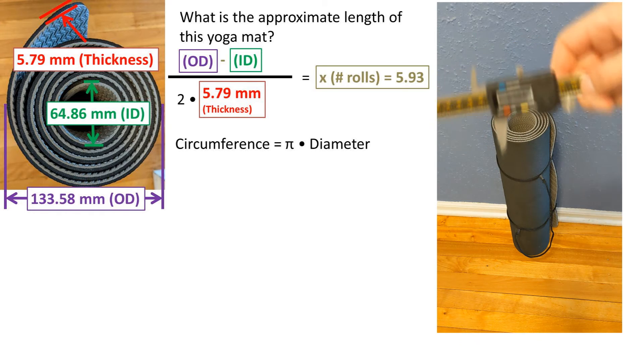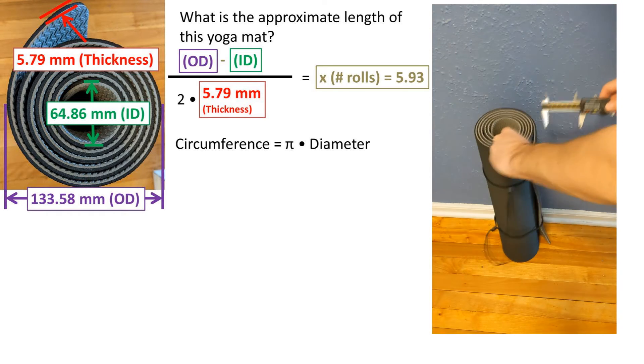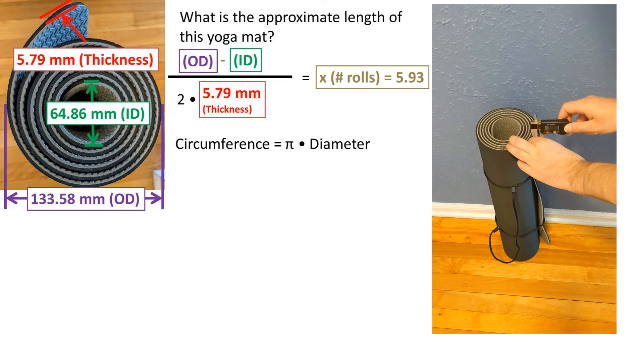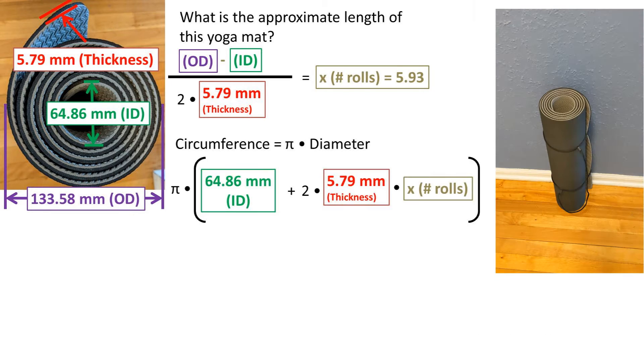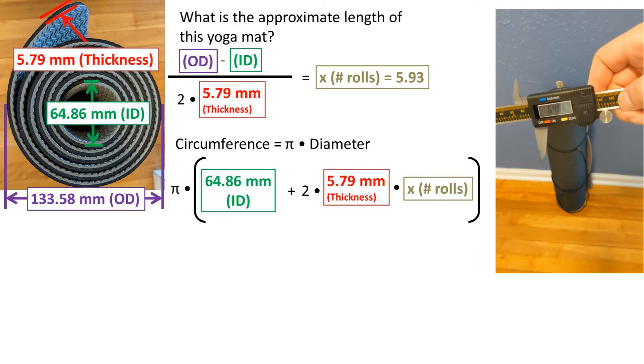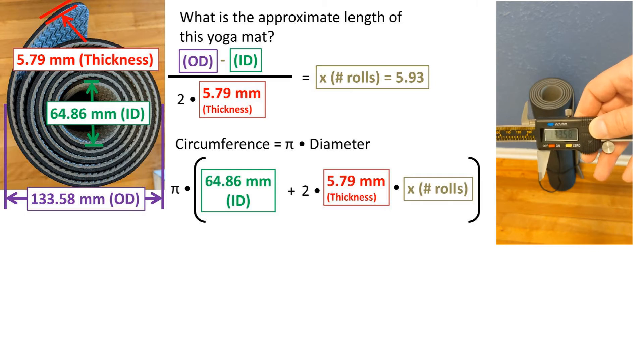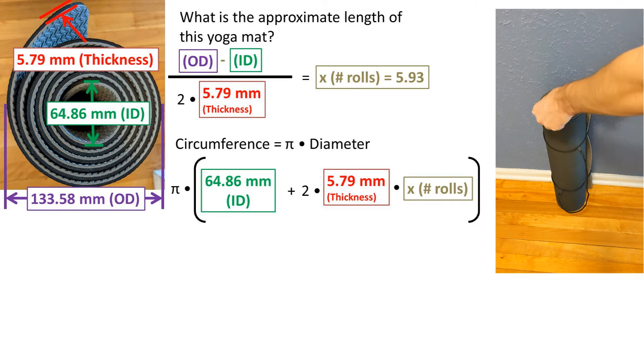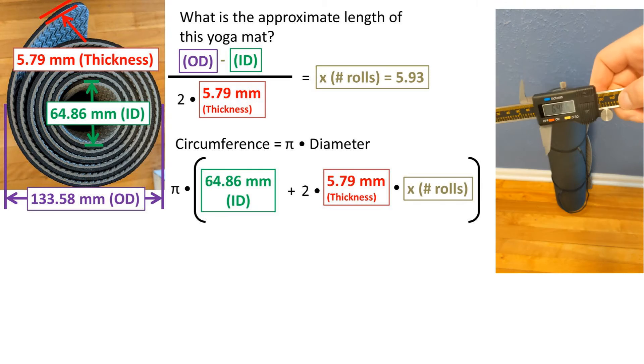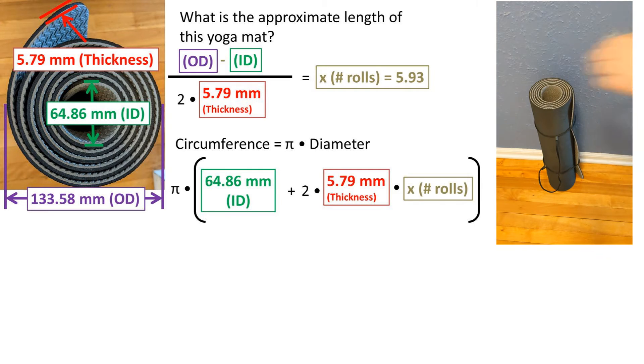Next we'll need to recall the circumference formula for a circle which is the constant pi times the diameter. Now we need to make a formula for the circumference given a certain number of rolls. So we have that the internal diameter plus two times the thickness times the number of rolls all times pi is equal to the circumference. Because for every time you make one rotation the diameter increases by two times the thickness.